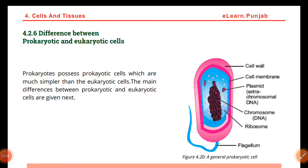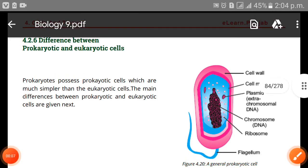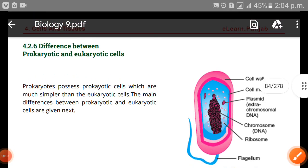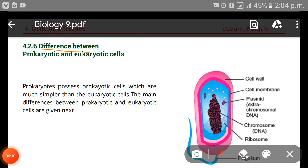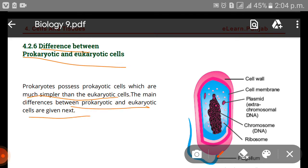Hello friends, welcome back to our channel. Today we are going to chart the difference between prokaryotic and eukaryotic cells. We have studied a little bit earlier, but now we will see the major differences between eukaryotic and prokaryotic cells. Prokaryotes possess prokaryotic cells which are much simpler than the eukaryotic cells. The main differences between the prokaryotic and eukaryotic cells are given next.